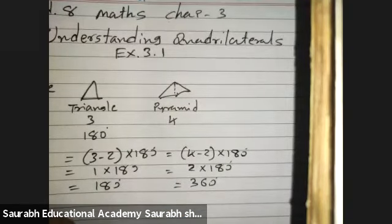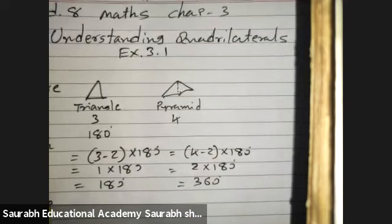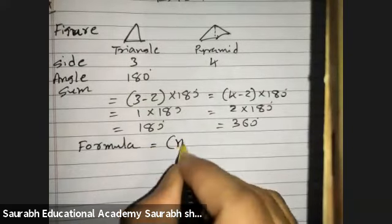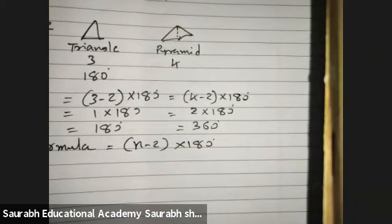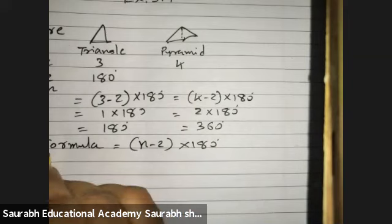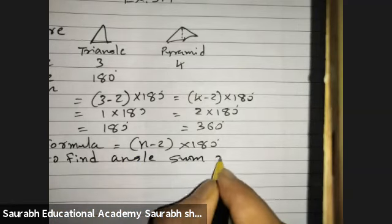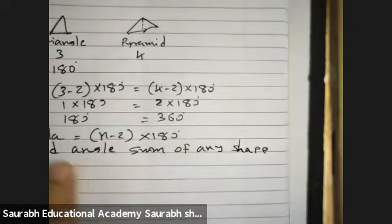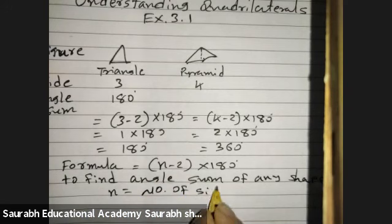The next side given is 5. The formula here will be N minus 2 into 180 to find the angle sum of all the sides. N minus 2 into 180 is the formula to find the angle sum of any shape. N is equal to number of sides.